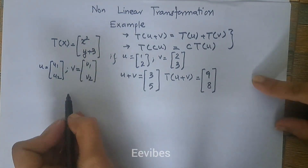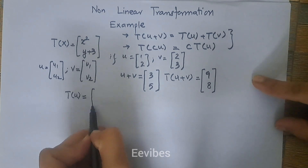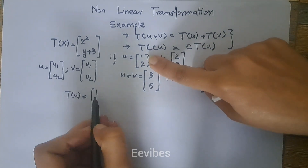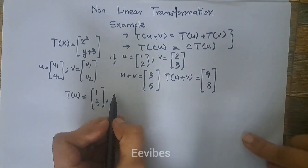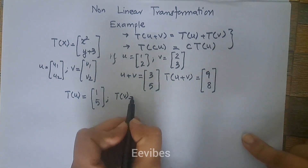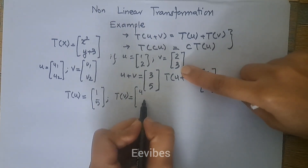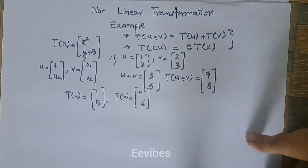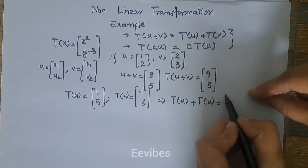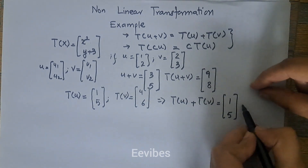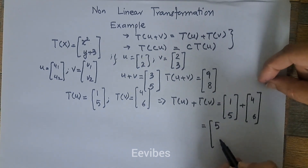Now for the right-hand side: first find T(u). u = (1, 2), so squaring x gives 1² = 1, and incrementing y by 3 gives 2+3 = 5. So T(u) = (1, 5). Next find T(v). v = (2, 3), so 2² = 4, and 3+3 = 6. So T(v) = (4, 6). Adding these: T(u) + T(v) = (1+4, 5+6) = (5, 11).